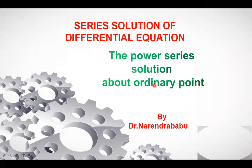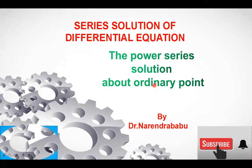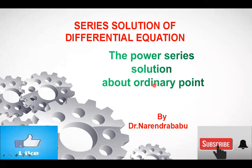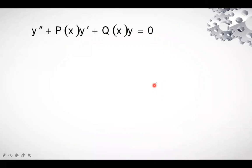Before that, let's recall how to solve the problem — we have to remember a few steps. First of all, we convert the given differential equation into the standard form: y'' + P(x)·y' + Q(x)·y = 0. Then, for a given point x = x₀, we check whether that point is an ordinary point or not.